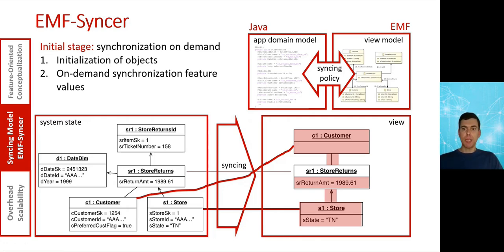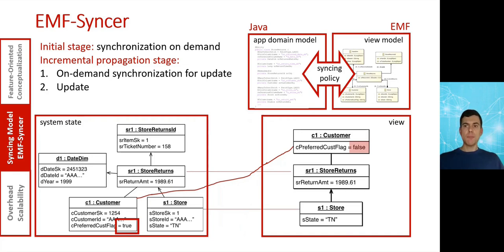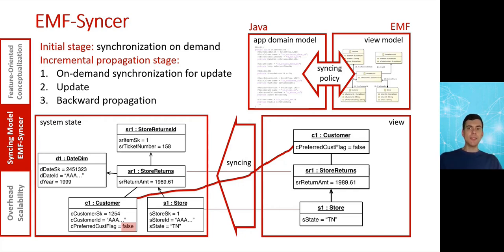This means that the latency experienced by the user during syncing is balanced between object initialization and on-demand loading, and is task-dependent. Once all objects required for performing an update are synced, the update is performed on the model instance — in our case, flagging customers that are returning products too frequently. EMF Syncer detects where those updates have been applied and narrows down the parts of the source program snapshot related to them. Such updates may break the consistency relation between the program and the model, for example if the preferred customer flag has different values in the model and in the program. The EMF Syncer can then sync back the update at the level of feature value incrementally, which is much more efficient than propagating the whole model back.